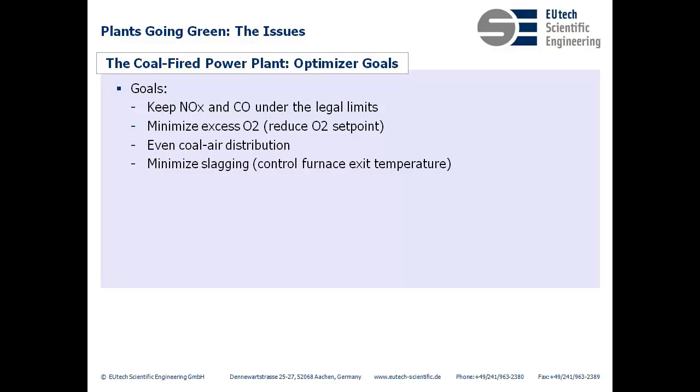If not all of the mills around the boiler are active, this can lead to uneven coal distribution of coal entering the combustion chamber and hence lower efficiency. The optimizer also aims to control the air dampers so that coal distribution inside the boiler is as even as possible.